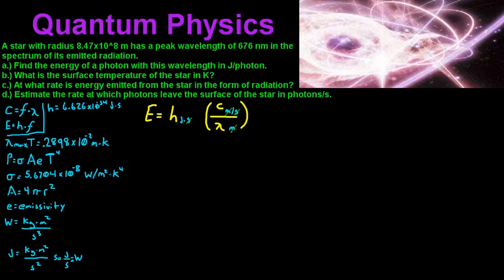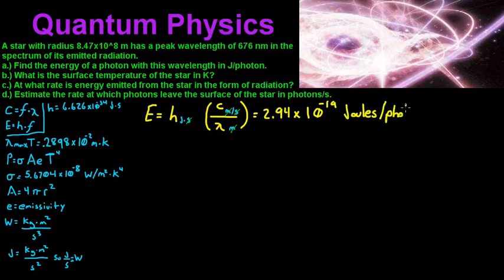So for our answer, we get 2.94 times 10 to the negative 19 joules per photon.